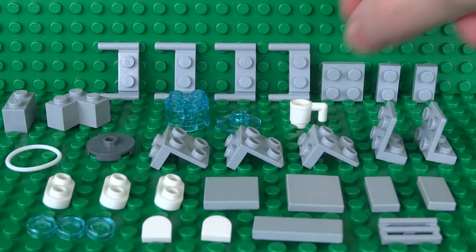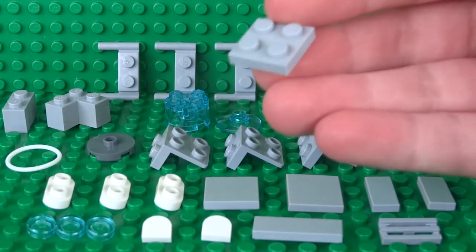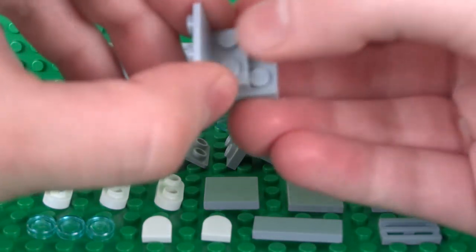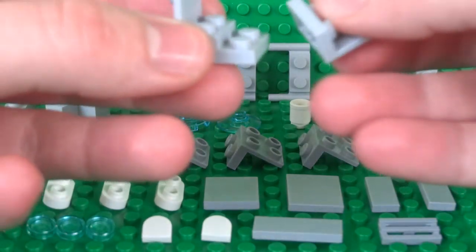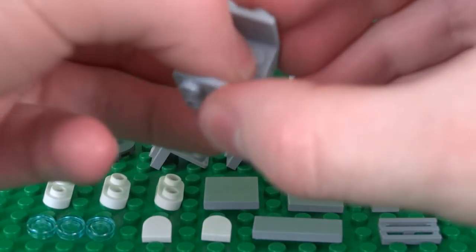Once you've got your pieces, we can start by building the base with a 2x2 plate and two inverted 1x2 bracket pieces.